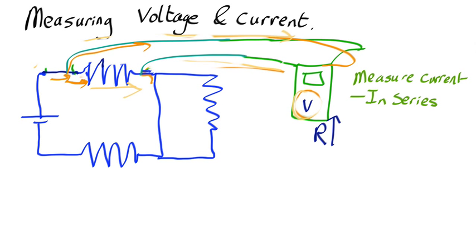So you should be measuring what the potential difference across the resistor would be if your multimeter wasn't there, which is what you're after. So to measure voltage, you put your multimeter in parallel.